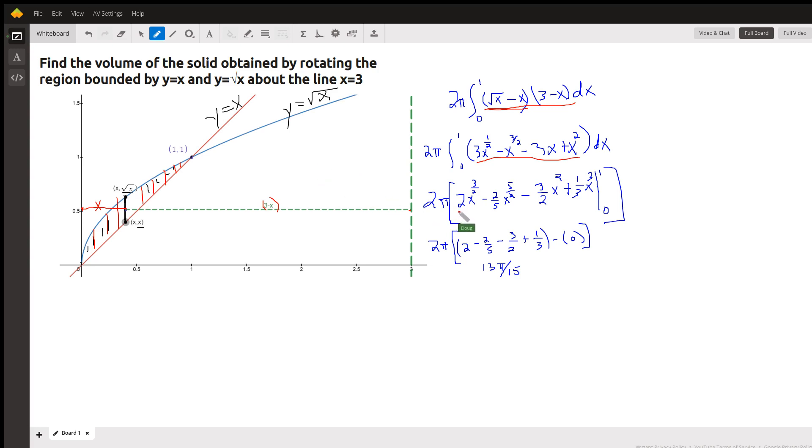The antiderivative looks like that, evaluated from 0 to 1. Put 1 in. All the powers of x just become 1, so we get these coefficients. And when we put 0 in for x, we just get a 0.